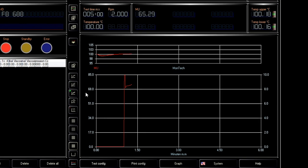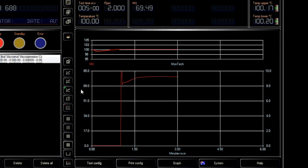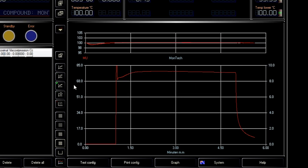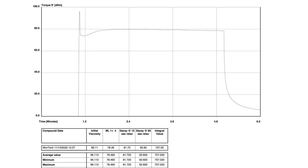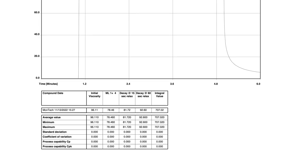Data from the test is displayed live in the software as the test is performed. Test results can be used to assess compounds, ensuring they meet quality control specifications and to compare with data from previous tests to ensure uniformity between batches or polymer shipments.